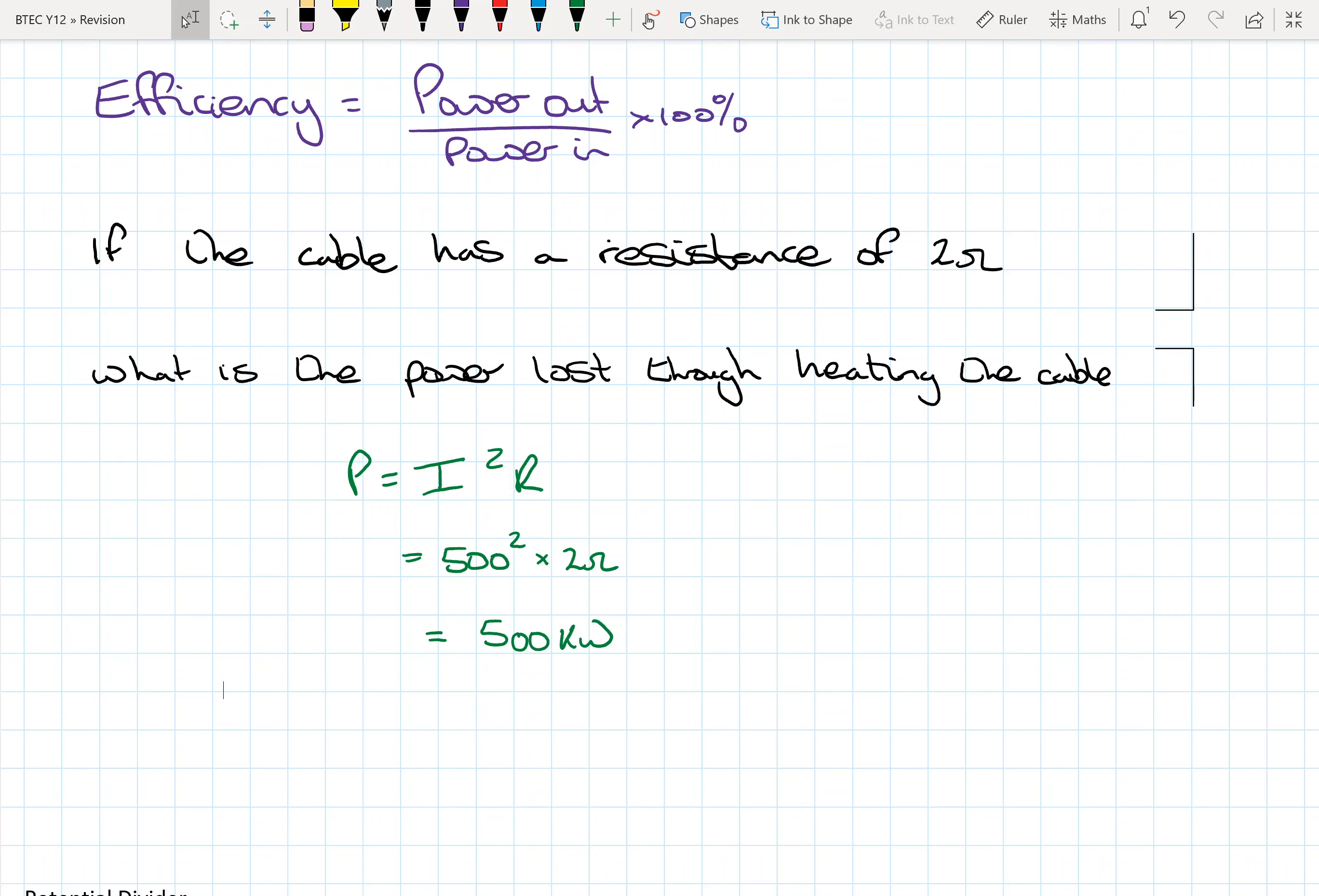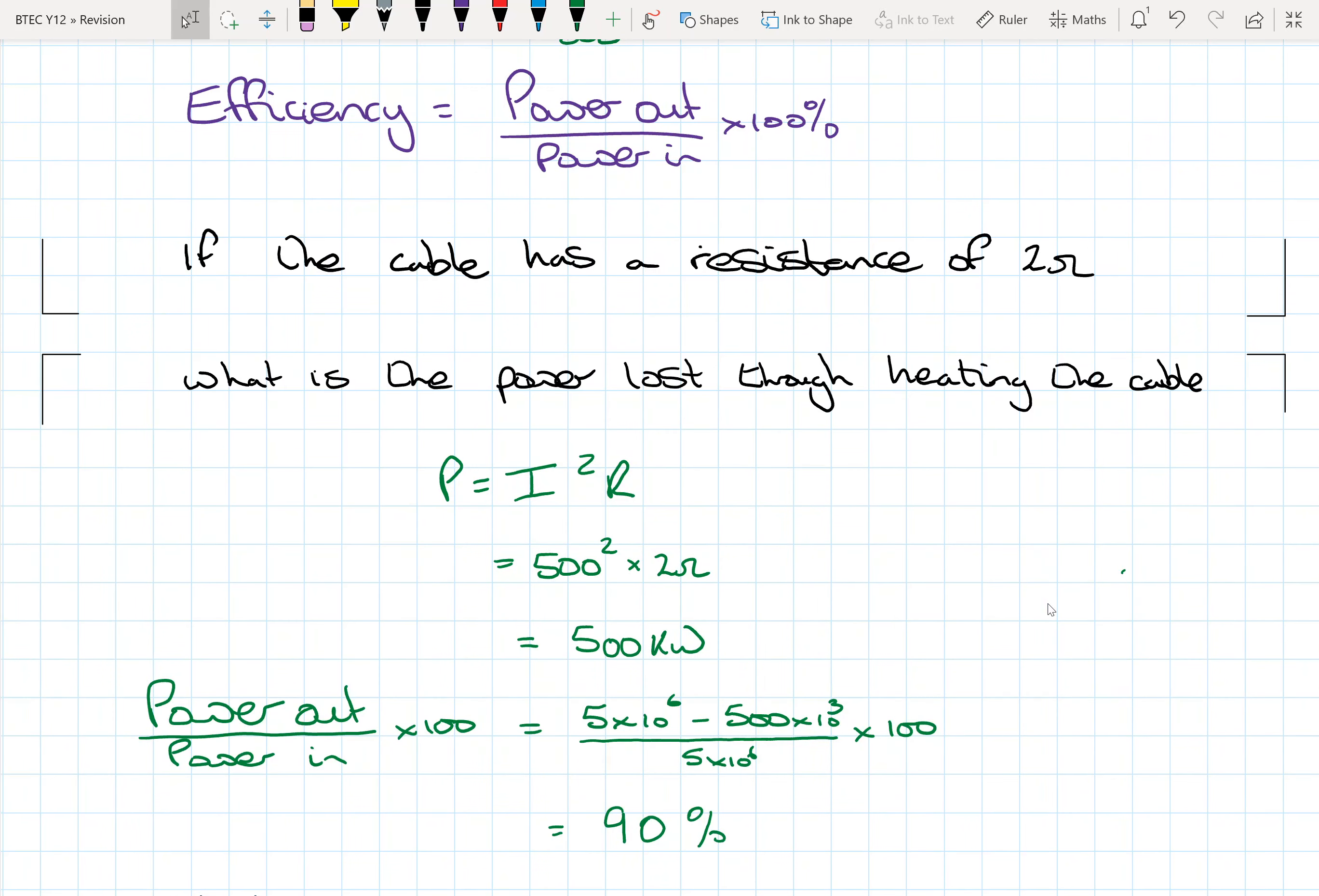So let's look at what the efficiency is going to be. So our efficiency then power out divided by power in. So to gain our power out, we've got to take the power that's being generated in the first place, minus the loss that we've got on the cables. So that will give us what our power out is going to be.